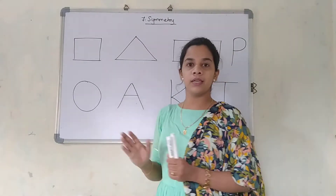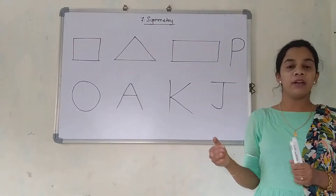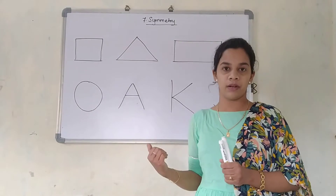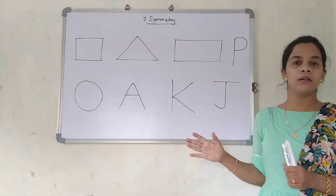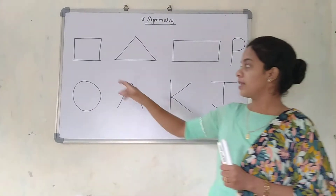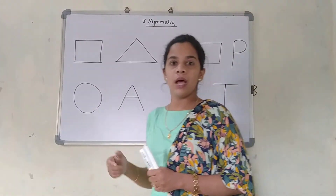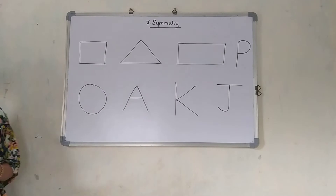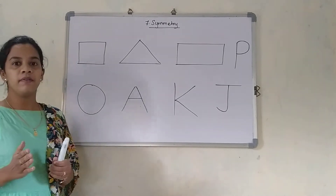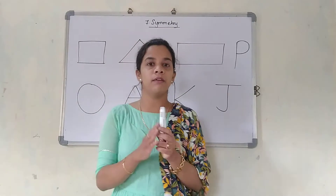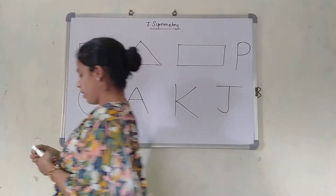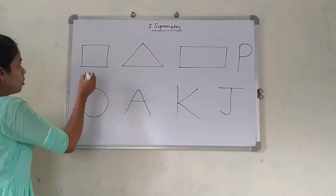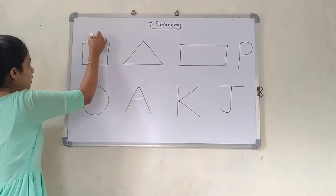Now just focus on the board. You can see there are a few figures drawn for you, and we are trying to draw an axis of symmetry between them and tell whether each is symmetrical or not. If you can see over here there is a square. I can divide this square as I want. If I divide it in half, you can see it will be two equal parts. So this can be the axis of symmetry.